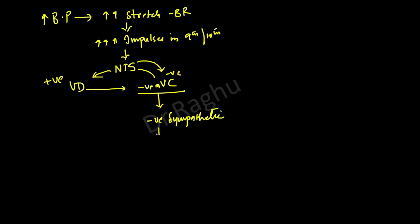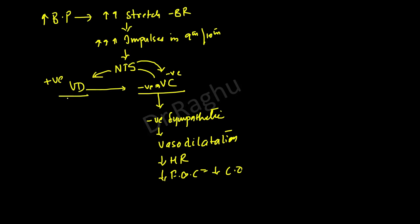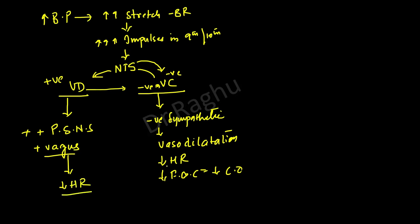Inhibition of the sympathetic nervous system causes vasodilation, a reduction in heart rate, and a reduction in force of contraction of the heart, decreasing cardiac output. Stimulation of the vasodilatory area also stimulates the parasympathetic nervous system (vagus), which further decreases heart rate. Vasodilation, reduced heart rate, and reduced cardiac output together decrease blood pressure — this is how the baroreceptor mechanism regulates blood pressure.